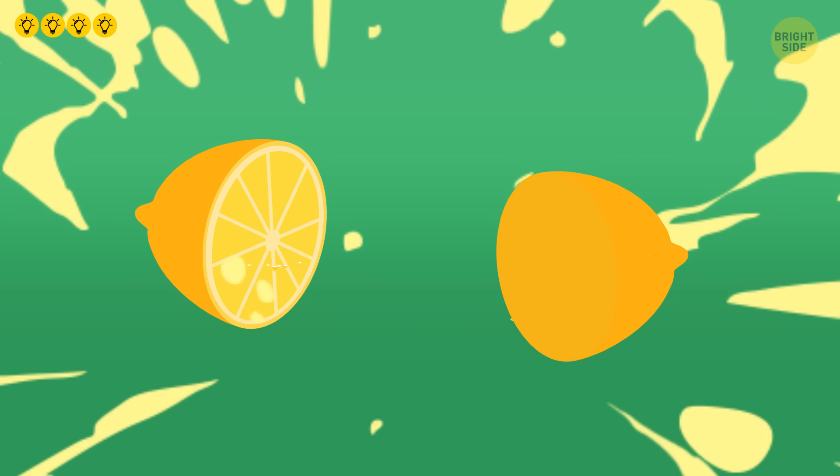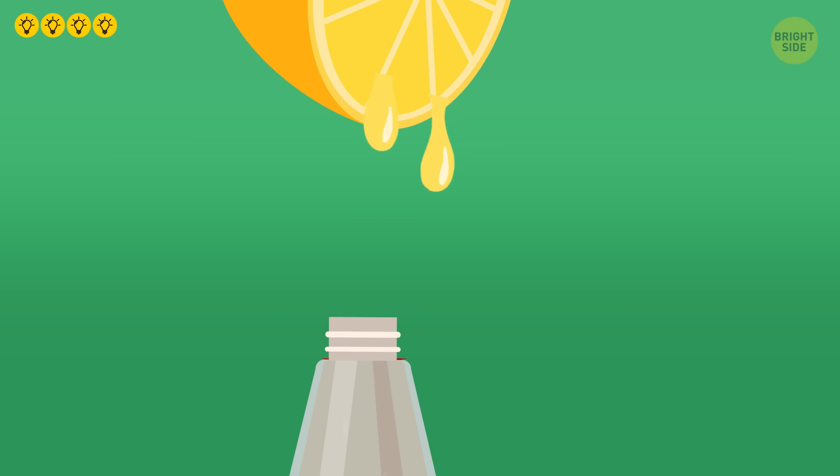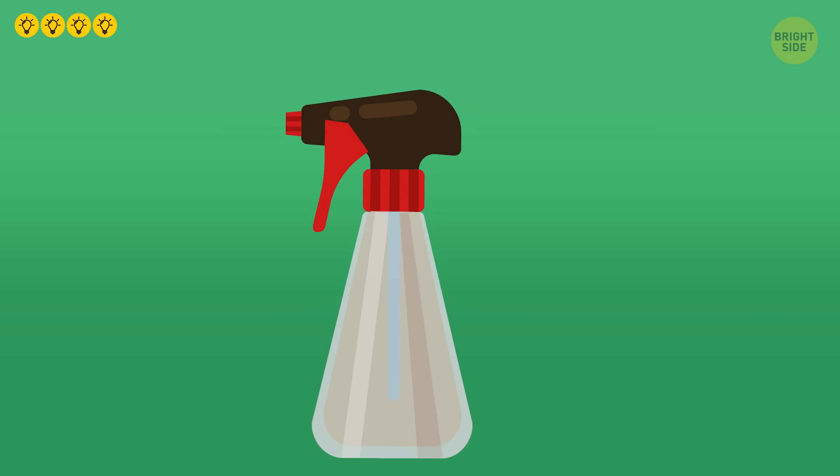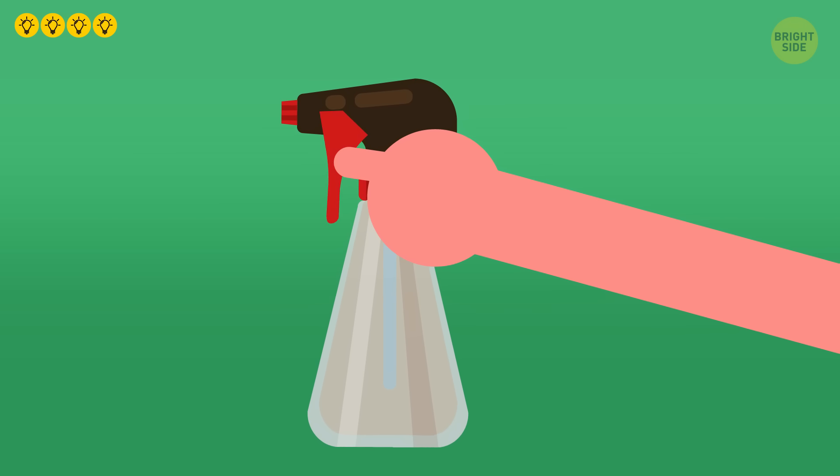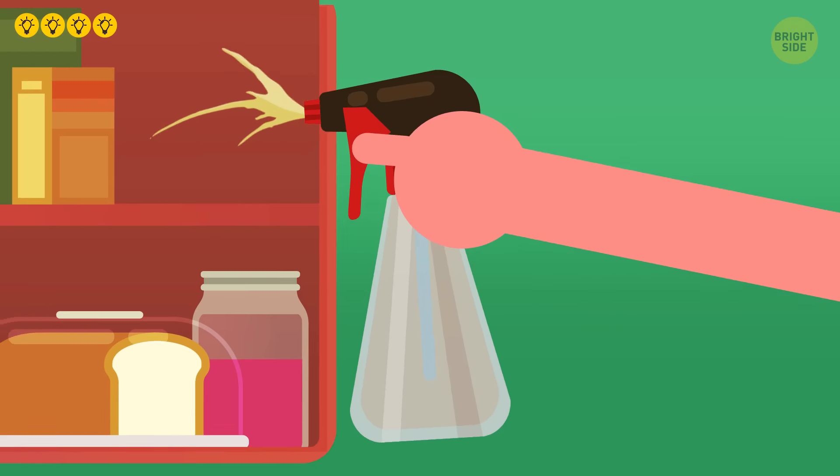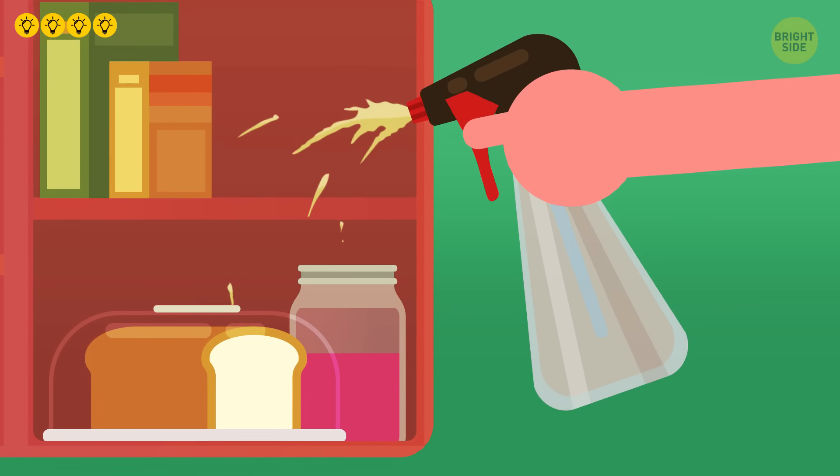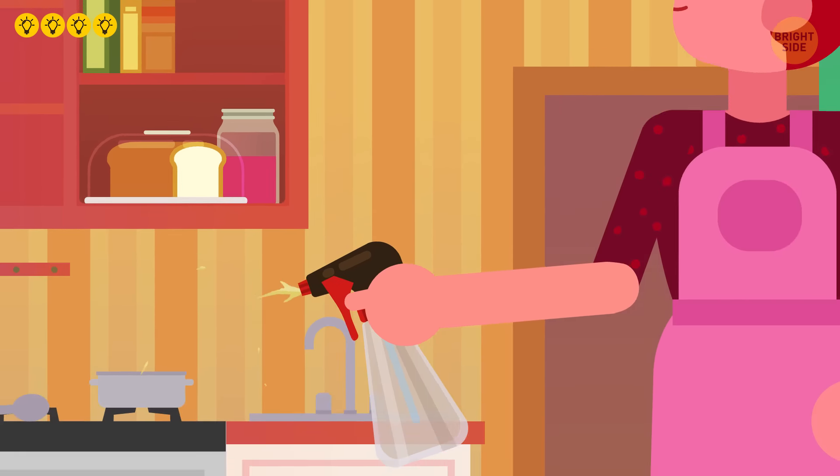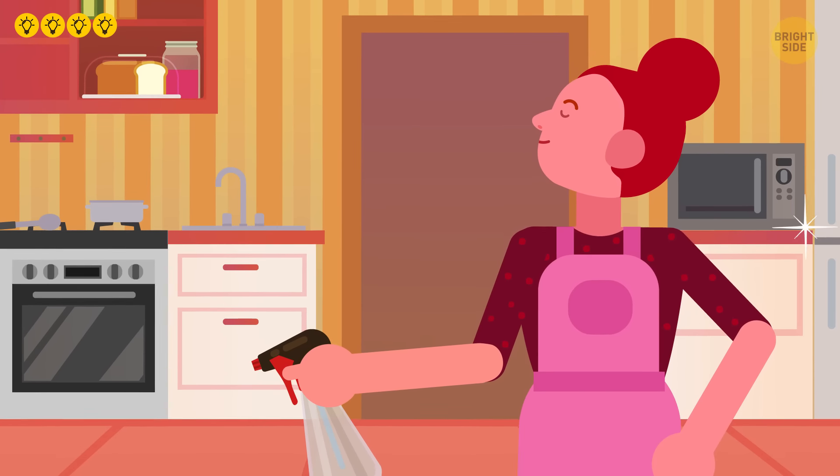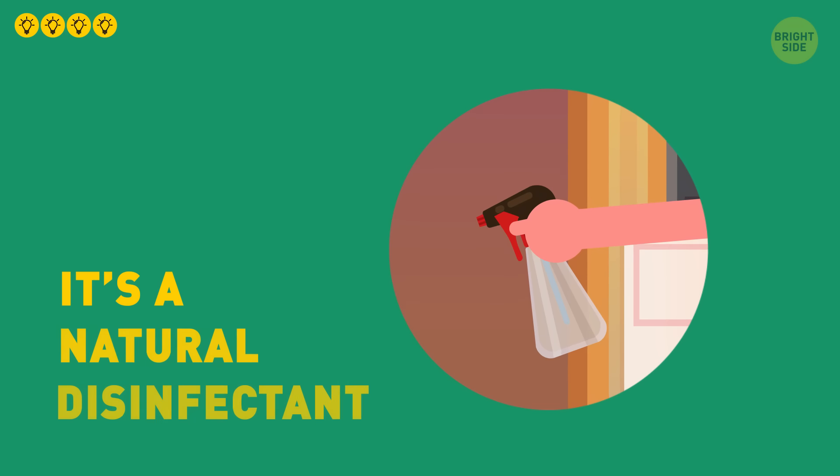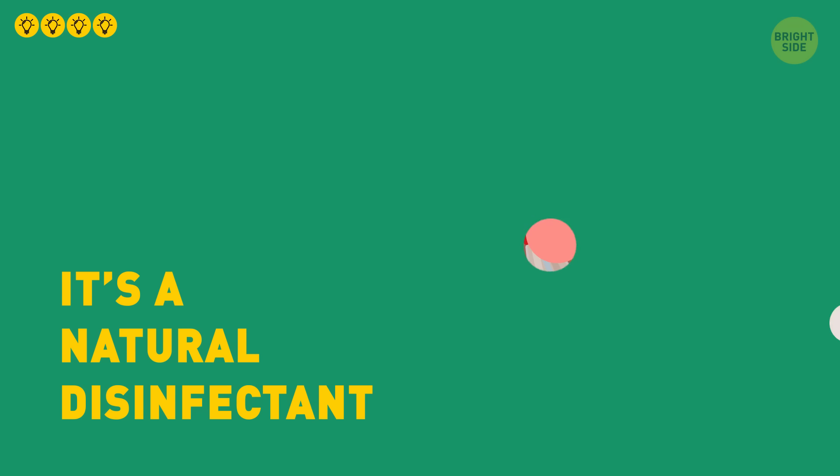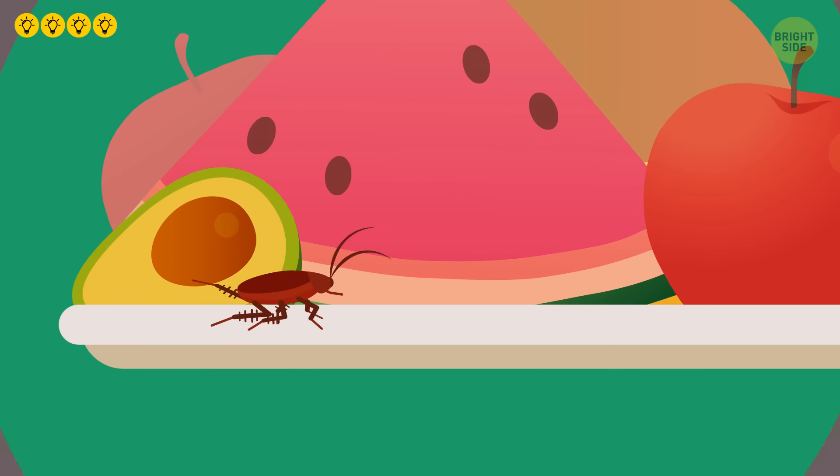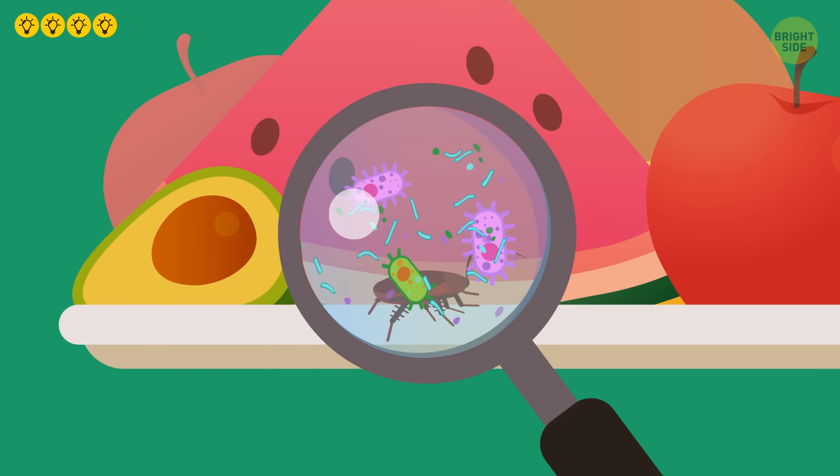Lemons. Cut a lemon in half and squeeze it directly over your surfaces. You can also mix some lemon juice with a little water in a spray bottle to target those hard-to-reach areas that cockroaches love so much. The lemon juice will effectively repel these pests, and your kitchen will smell amazing too. An added bonus is that it's also a natural disinfectant. That's crucial since roaches carry a host of dangerous bacteria and viruses.